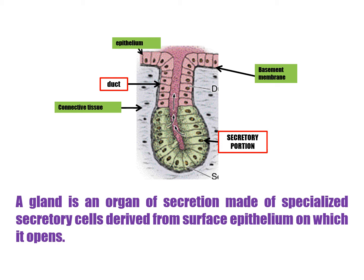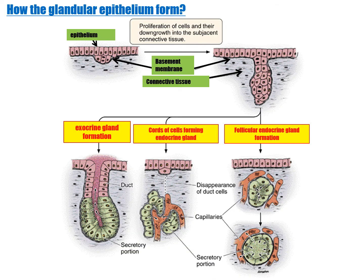The glandular epithelium is formed by proliferation of cells and their downgrowth into the subjacent connective tissue. The basement membrane supports epithelial cells which grow downward. If a duct is present, the gland is called an exocrine gland; if the duct is absent, it is called an endocrine gland, where cords of cells form the endocrine structure.